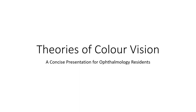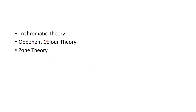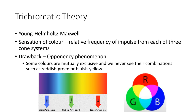Hello guys, this is Indian Medico and in this video we are going to discuss about theories of color vision. There are three theories of color vision: trichromatic theory, opponent color theory, and zone theory. First, let us discuss about trichromatic theory.